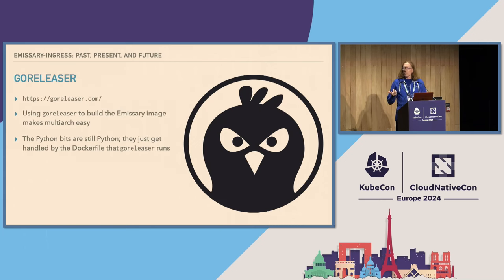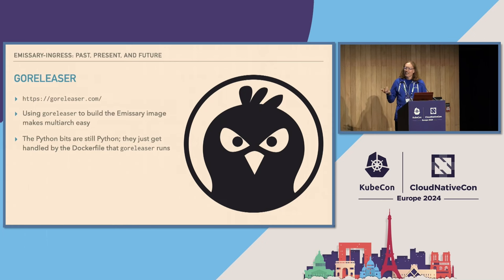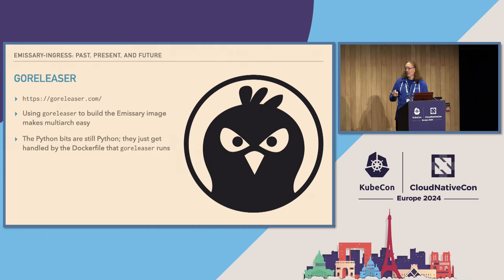Is there anybody here who's not familiar with GoReleaser? Weirdly, it's a tool whose job is to make it easier to release things written in Go. Using it for Emissary is perhaps slightly counterintuitive because a lot of Emissary is still written in Python. But GoReleaser is fine with that. We can use GoReleaser to directly build the Go bits and then bring in a Dockerfile that pulls in the Python. This works really nicely and has the advantage that GoReleaser then handles all the horrible multi-arch stuff, which means I don't have to write it.